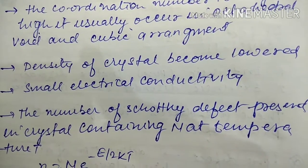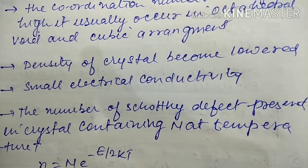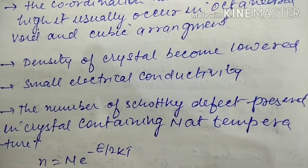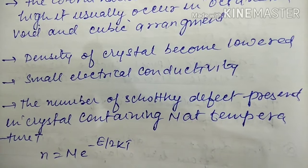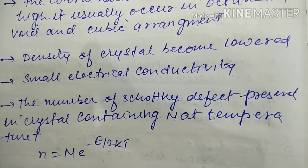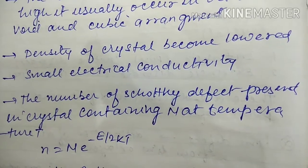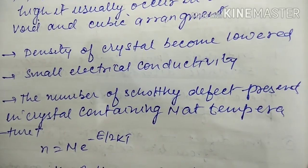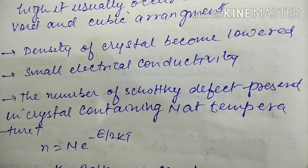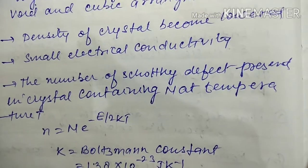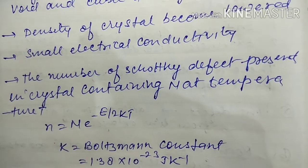Due to dislocation of cation and anion, the density of the crystal becomes lower and some electrical conductivity is also produced. The number of Schottky defects in a crystal containing N atoms at temperature T is: n = N · e^(−E/2kT), where k is Boltzmann's constant = 1.38 × 10⁻²³ J/K.